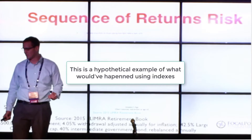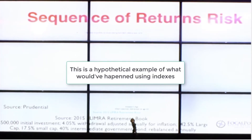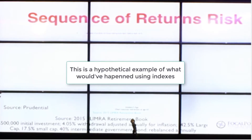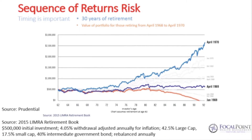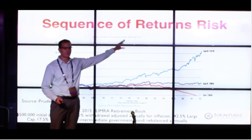Now I want to give you a real-life example of how this has actually worked in the past. The source is Prudential and the Limber Fact Book. This is someone that started off with half a million dollars, withdrawing 4.05%, with a 60% stocks and 40% bonds allocation. Someone who retired in April of 1970 had a little over two and a half million dollars left after 30 years. The person that retired just one year before them had a little over $500,000 left. And the person that retired four months before then ran out of money after 29 years. There's a 16-month window here.